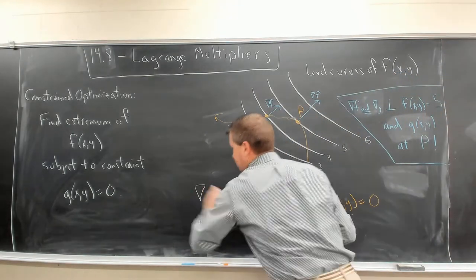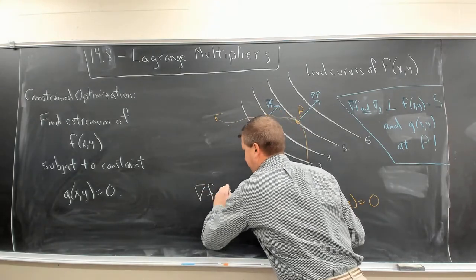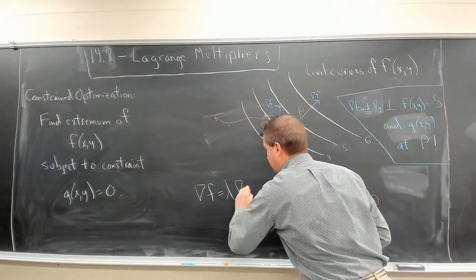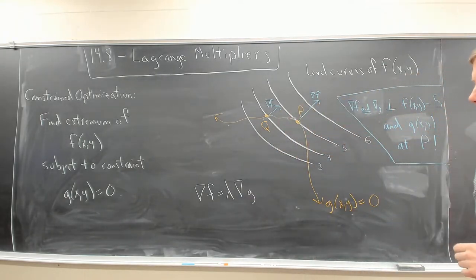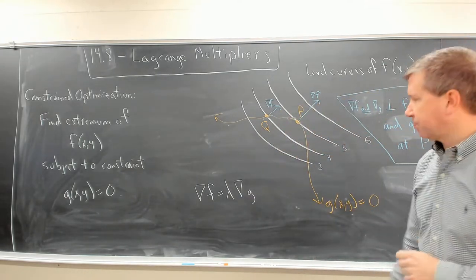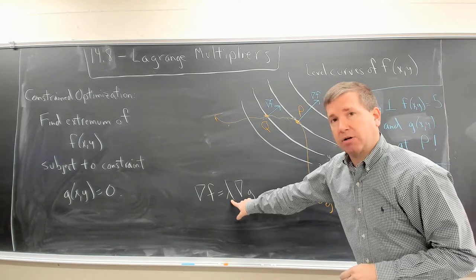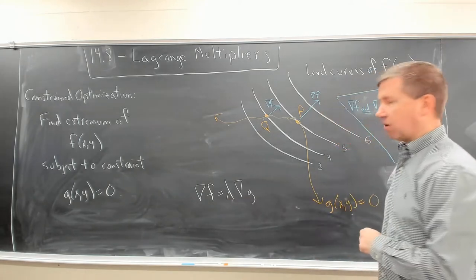the gradient of f must be some scalar multiple of the gradient of g. This scalar lambda is called the Lagrange multiplier.